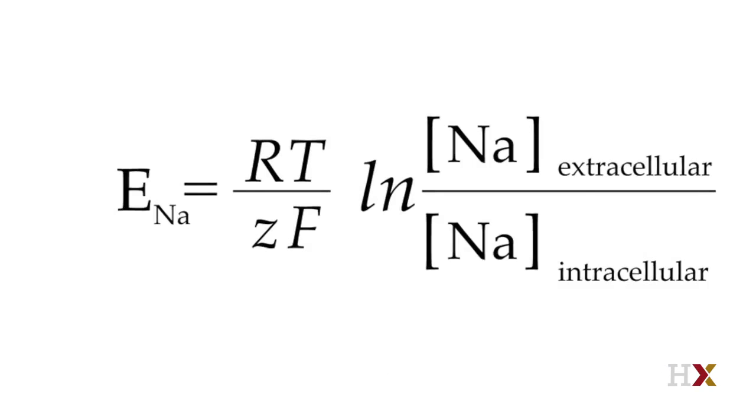If the neuronal potential for sodium is around positive 60 millivolts, and I told you that chloride has about the same ion concentrations inside and outside as sodium, what would the neuronal potential for chloride be?